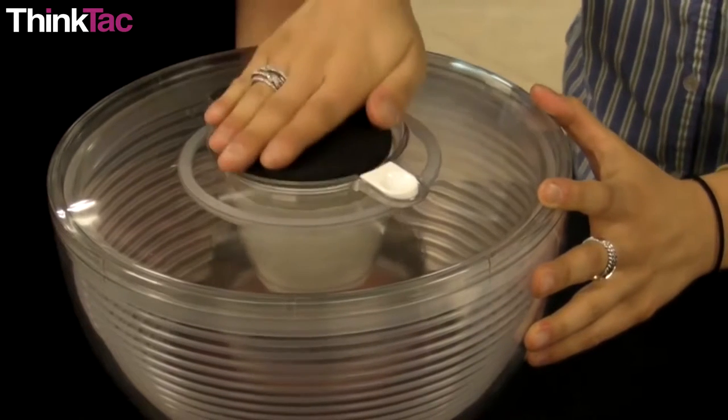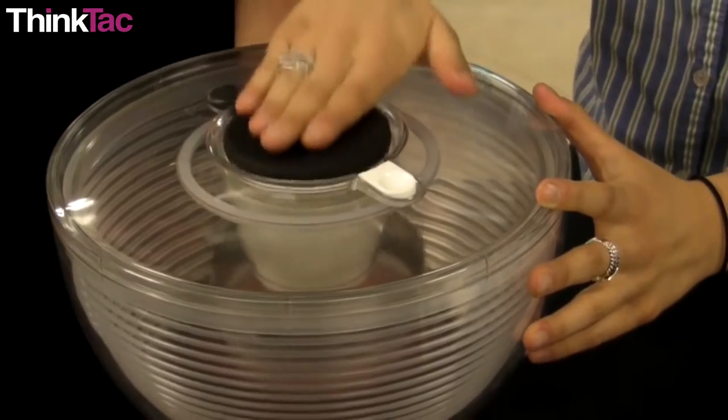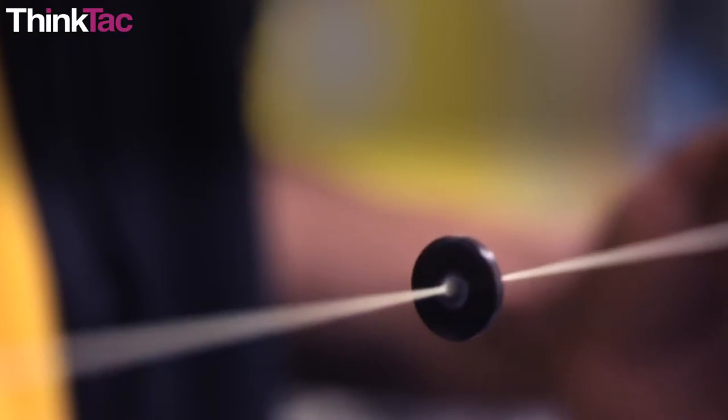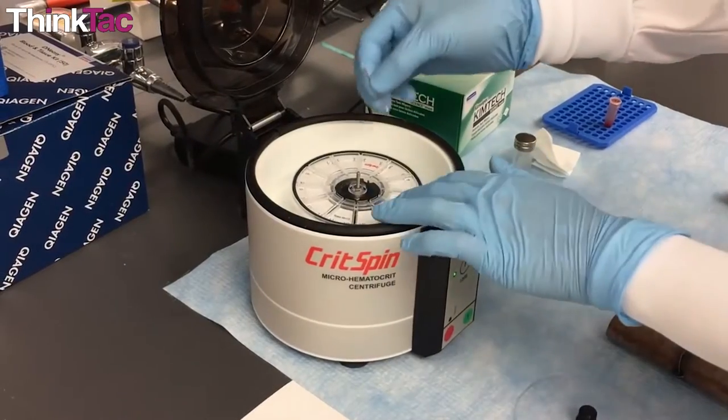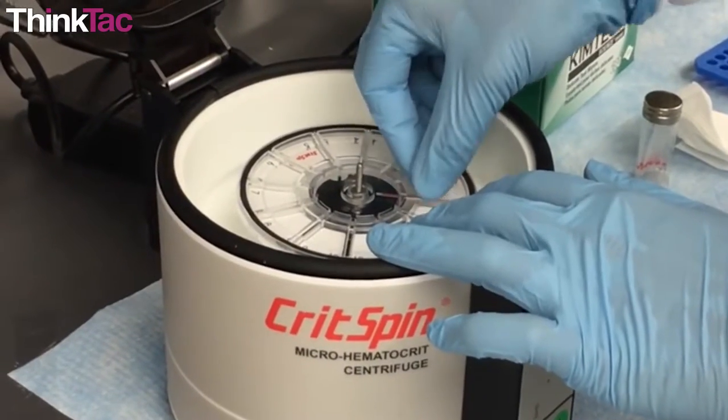A centrifuge is a device that can spin rapidly, causing a mixture to separate into its components. It is commonly used in labs to separate blood into its components, for example.